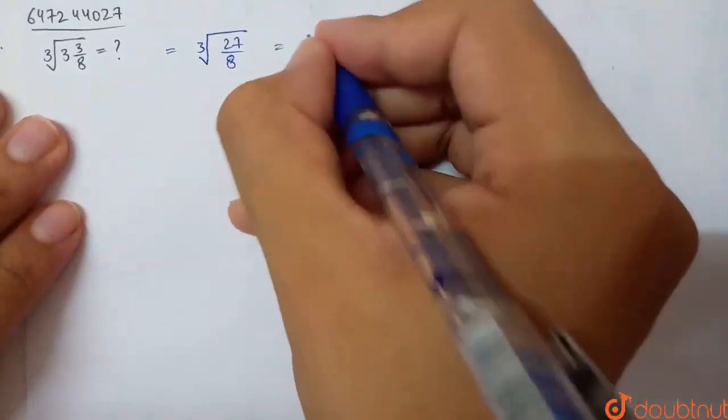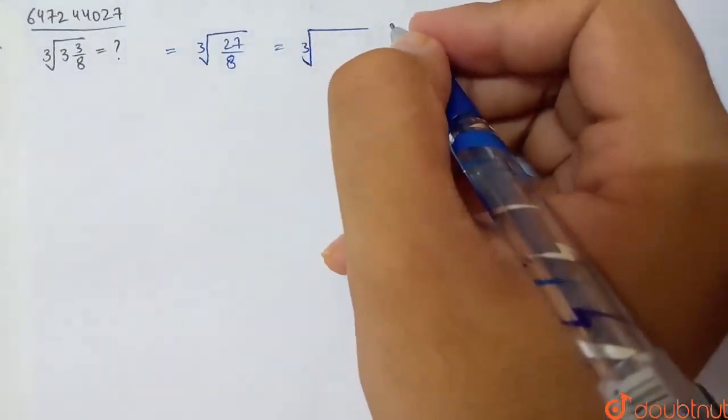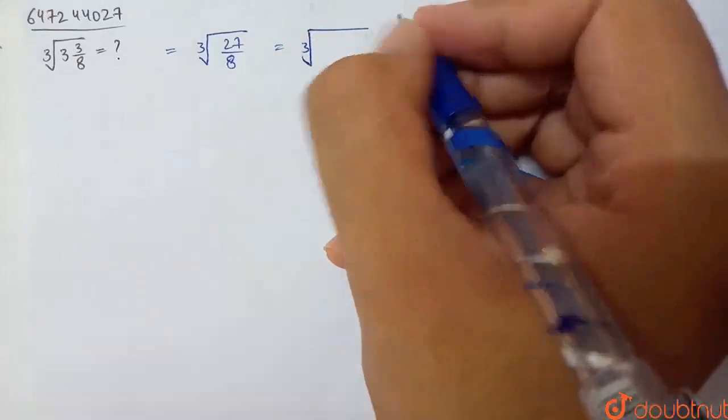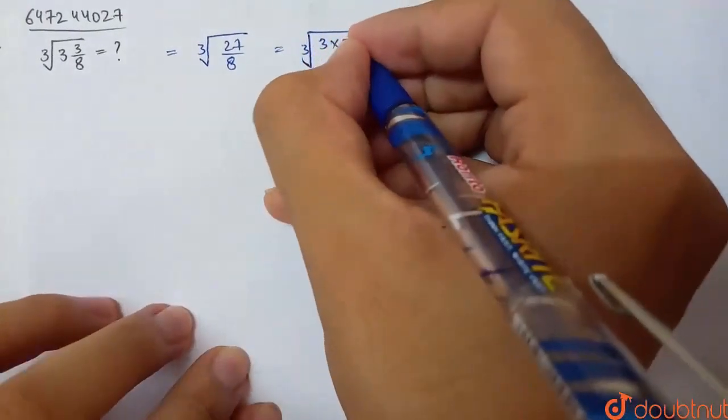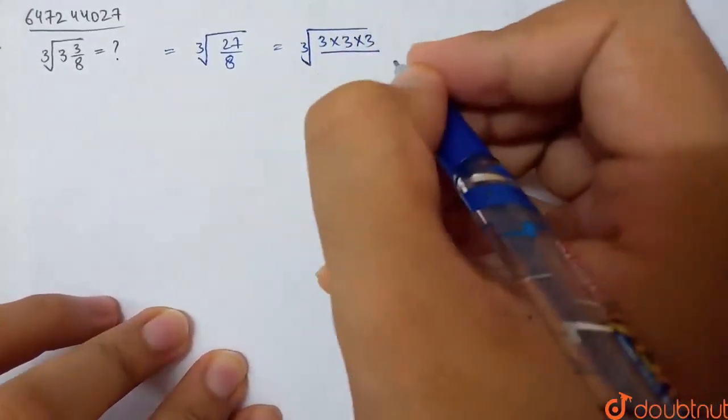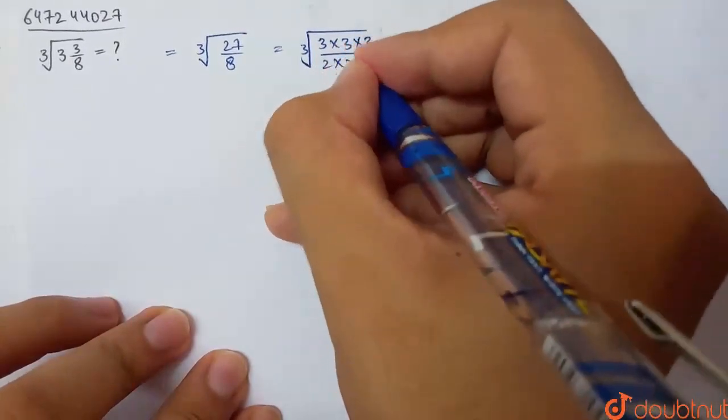So this is basically our numerator. 27 is basically 3, 3's are 9, 3's are 27. So basically 3 into 3 into 3. And 8 is 2, 2's are 4, 2's are 8. So 2 into 2 into 2.